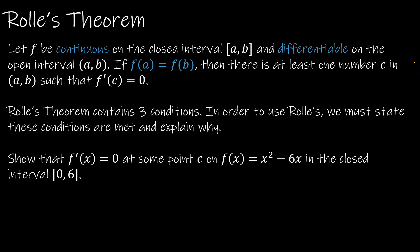Rolle's theorem says: let f be continuous on the closed interval [a, b] — that's the first condition — and differentiable on the open interval (a, b) — that's the second condition. If f(a) is equal to f(b) — that's the third condition — then there is at least one number c in the interval such that f'(c) = 0. This tells us that at some point between those two endpoints, there's going to be a horizontal tangent line. Rolle's theorem has three conditions, and to use it, I need to check them all.